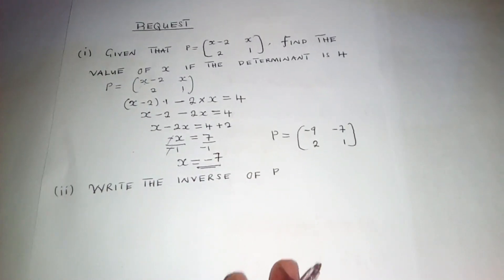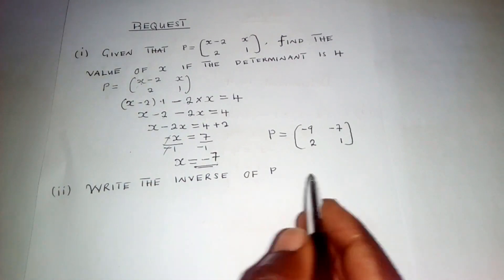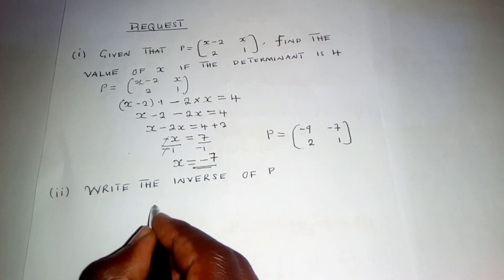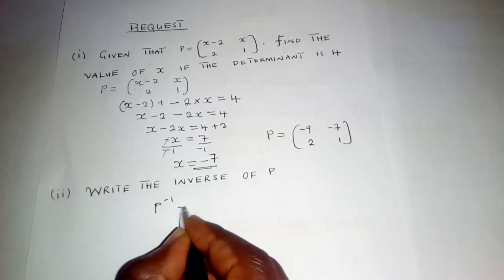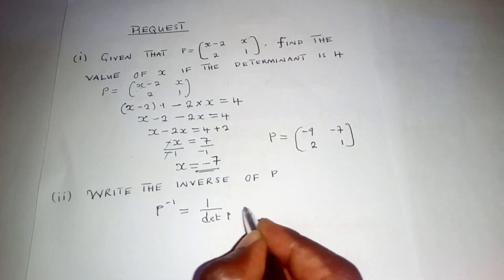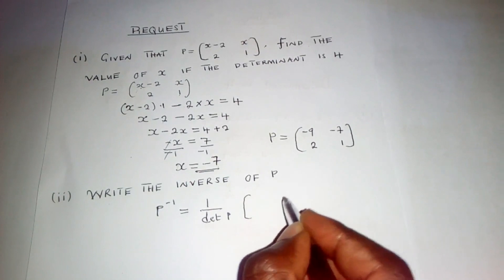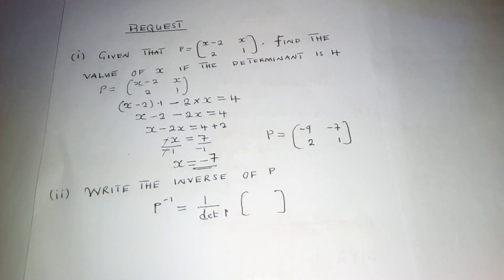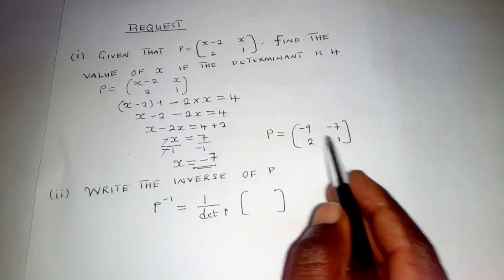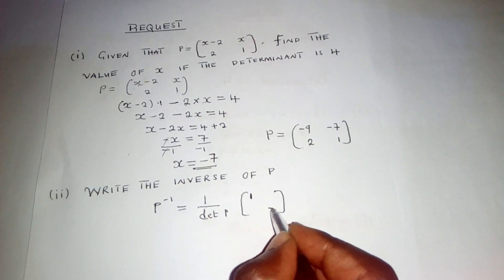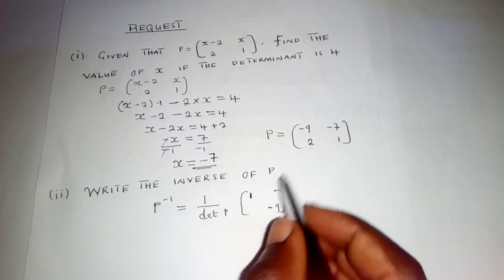So the next thing will be to find the inverse. For the inverse, we just use the formula. P inverse will be equal to 1 over the determinant of P, multiplied by the adjunct matrix. For this matrix, we'll switch the major diagonal — 1 will come on top and then negative 9 down here.